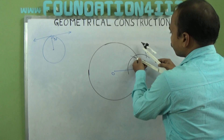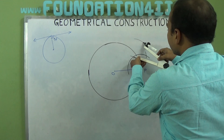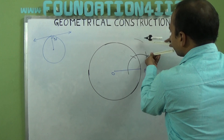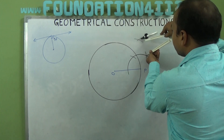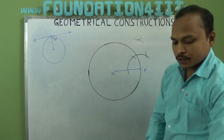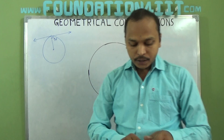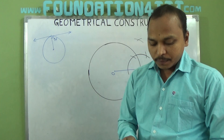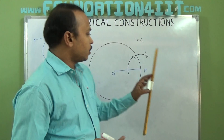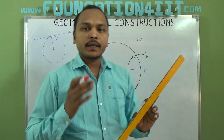Draw an arc above, then from that point also draw an arc with the same radius. Now join from point P to that intersection point — you'll get the tangent line.